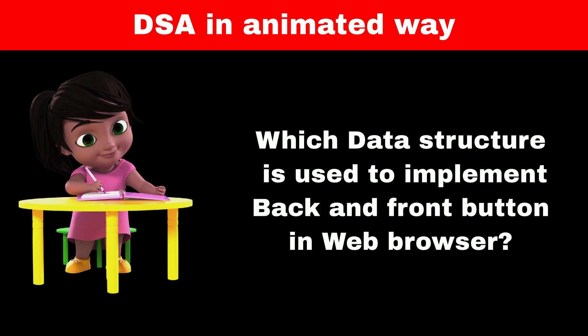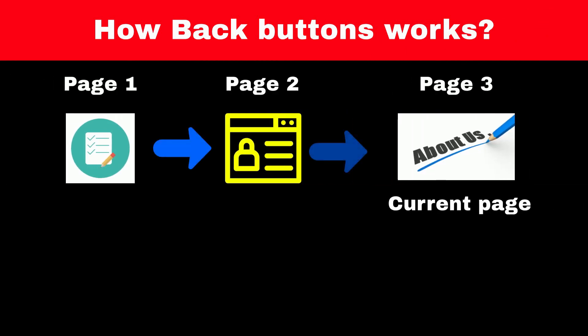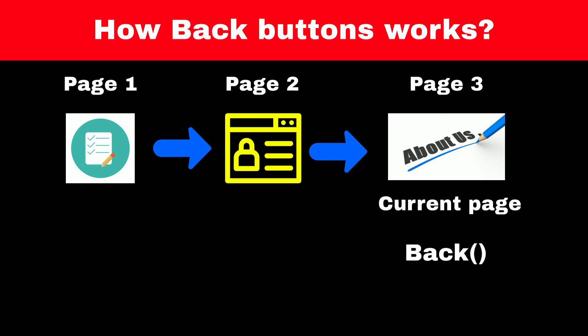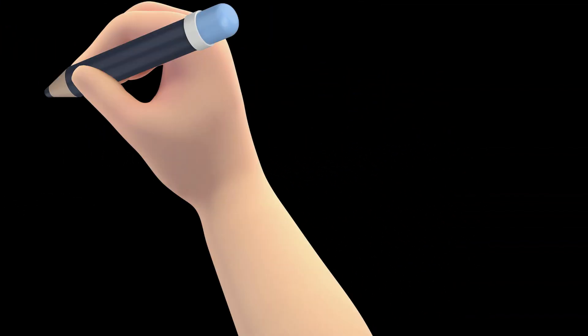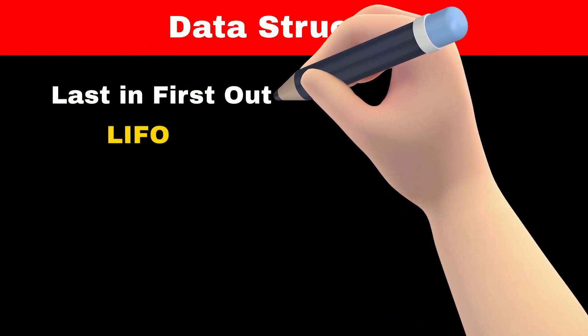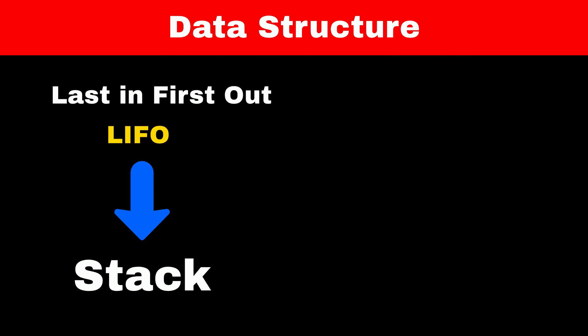Do you know which data structure is used to implement the back and front button in a web browser? Suppose we are navigating from page 1 to page 2 to page 3. When we press the back button, from page 3 we go back to page 2, and pressing back on page 2 takes us to page 1. In this scenario we are navigating to the last visited page — this operation is called last in first out, or LIFO, and the data structure which allows us to perform this operation is called a stack.